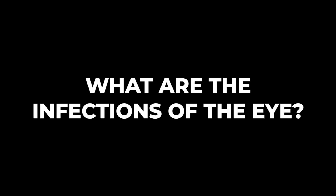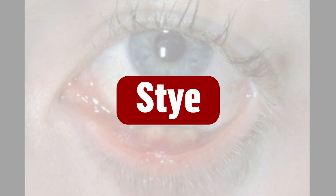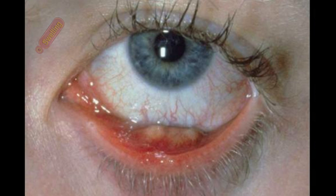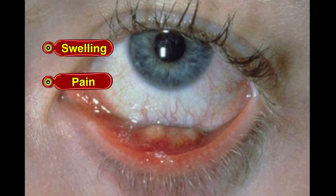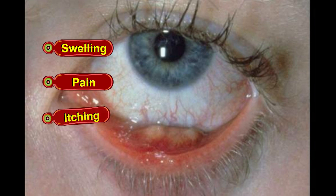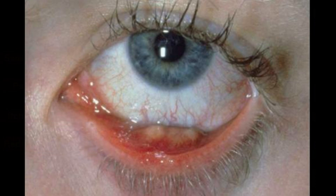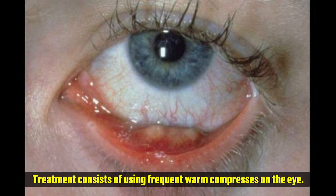What are the infections of the eye? A stye is an acute infection of the glands located at the eyelid margin. There is swelling, pain, itching and redness in a small area at the lid margin. Treatment consists of using frequent warm compresses on the eye.